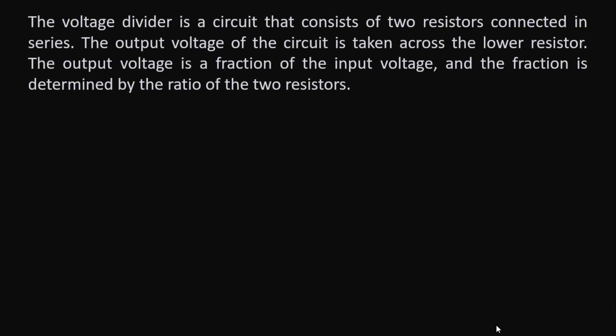A voltage divider circuit is a circuit that consists of two resistors connected in series. The output voltage of the circuit is taken across the lower resistor. The output voltage is a fraction of the input voltage, and the fraction is determined by the ratio of the two resistors connected in series.